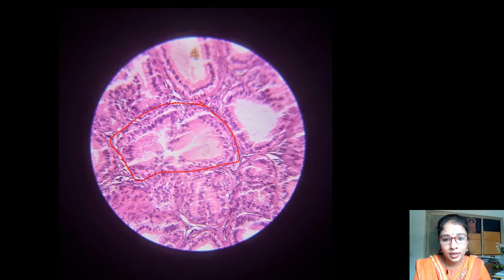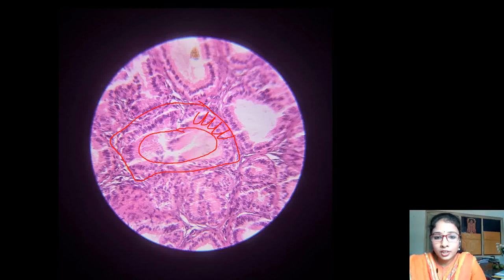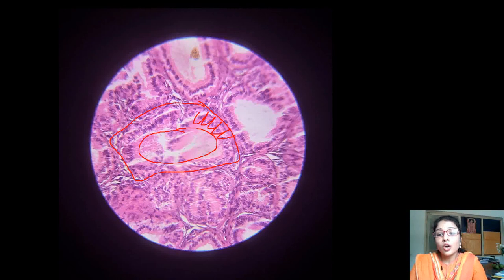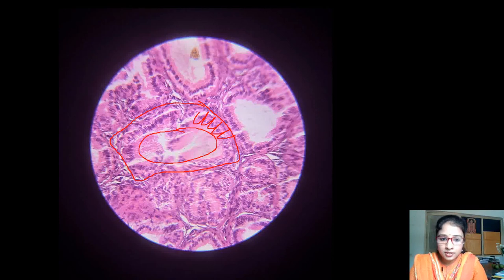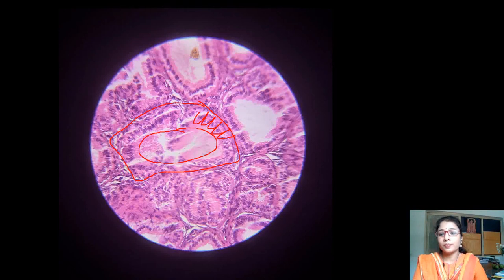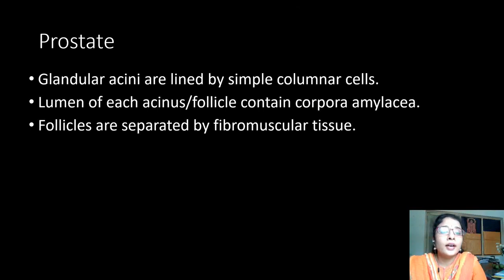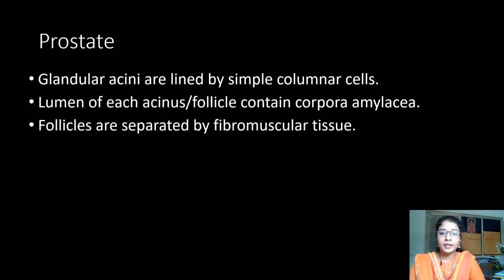The follicles are lined by columnar cells with nuclei visible. In the center of the lumen of each follicle, especially in older individuals, we can observe calcification structures called corpora amylacea, also called amyloid bodies. These are dense glycoprotein, starch-like structures which often get calcified and are more abundantly seen in older individuals. Identification features: glandular acini lined by simple columnar cells; lumen contains corpora amylacea; follicles separated by fibromuscular tissue.